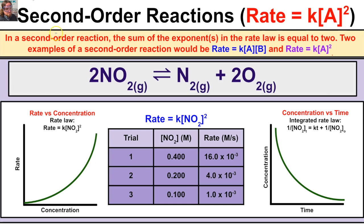In a second order reaction, the sum of the exponents in the rate law equals two. Two examples are: rate = k[A][B], where each exponent is one and they add to two; and rate = k[A]², where one reactant is second order. Looking at the decomposition of NO2 gas into nitrogen and oxygen, our rate law has only one reactant. We perform the reaction on three trials, changing the concentration of NO2 each time and measuring the rate.